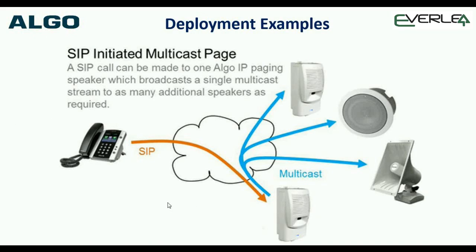Some deployment examples: using SIP with a cloud in the middle — it can be pretty much anything. Fundamentally, a SIP phone rings the SIP registration on the master, which then multicasts or pages, and the slaves all go off-hook simultaneously. These are all the different models — ceiling-mounted speaker, bullhorn, etc. That's fundamentally what multicasting is doing.